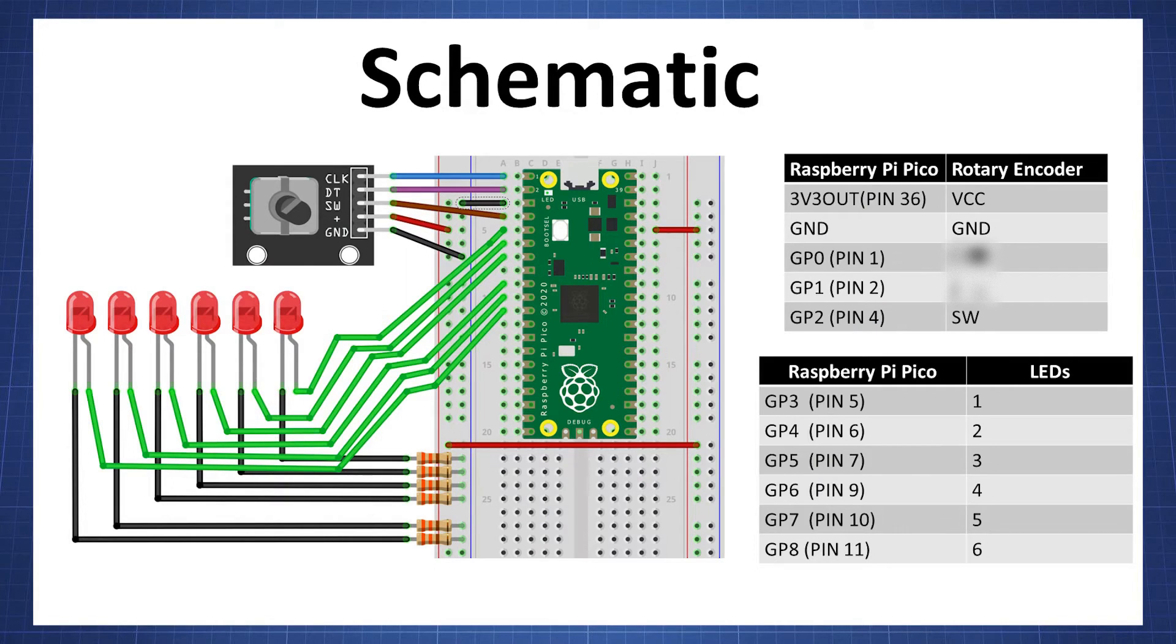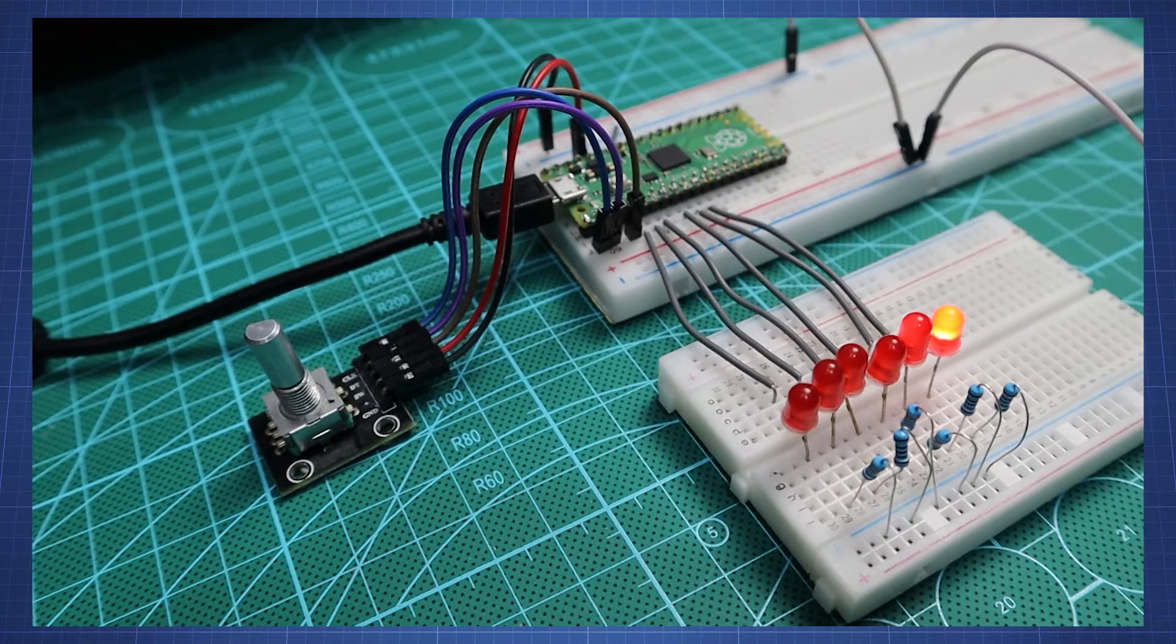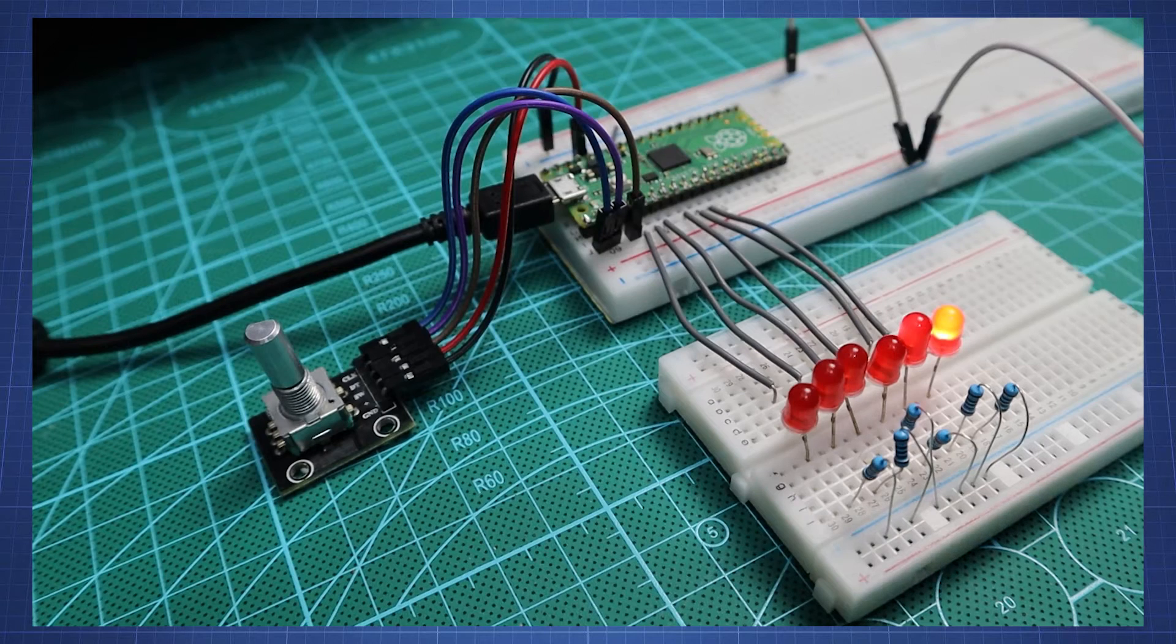Here is a schematic diagram for this example. You can choose any GPIO pins on your Pico to make the necessary connections. After making all the connections in the diagram we can go look at the code.